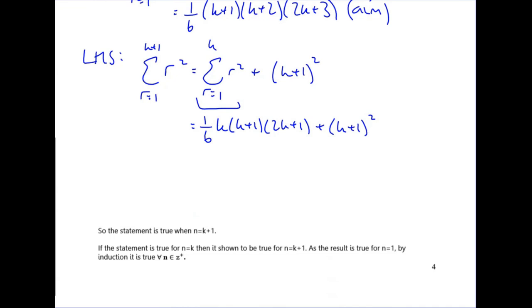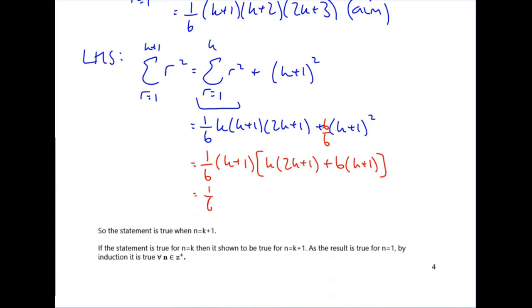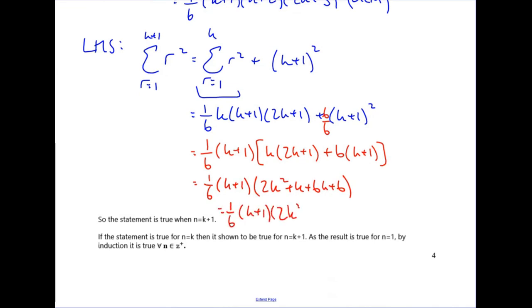Rather than expanding to get a cubic and then refactorising, factorise as far as you can first. Write a 6 over 6 in front of the (k+1) squared term to factorise out the 1 over 6. Both terms also have a (k+1) in common, so factorise that out. The remaining terms give k(2k+1) and 6(k+1) inside the bracket. Tidying up gives 2k² + 7k + 6, which factorises as (2k+3)(k+2), giving the result 1/6 · (k+1)(k+2)(2k+3) as required. This shows the statement is true for n equals k plus 1; tie it up with your final statement.